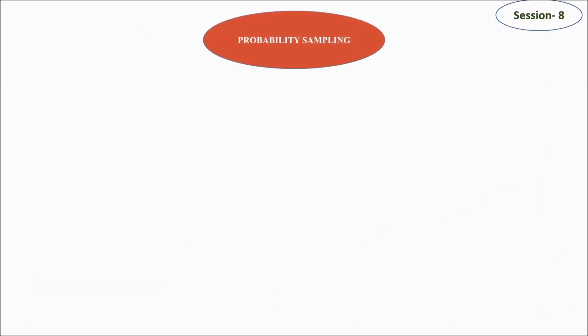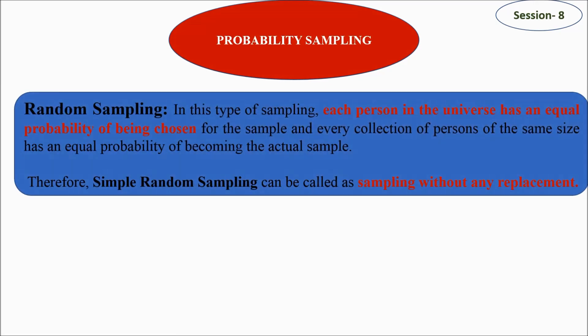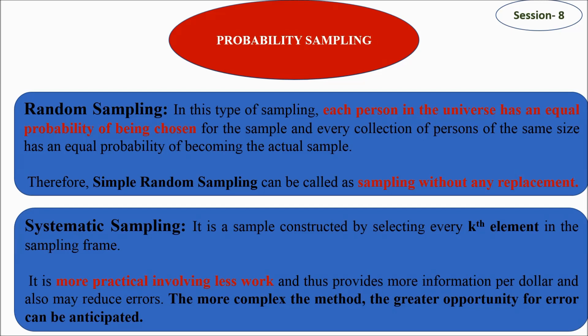The first type under probability sampling is random sampling. A sample is selected randomly, meaning each person in the universe has an equal probability of being chosen. Simple random sampling can also be called sampling without any replacement. Next is systematic sampling — selecting every kth element in the sample frame. It is more practical and involves less work, but it is sometimes a complex method and carries a greater opportunity for error.